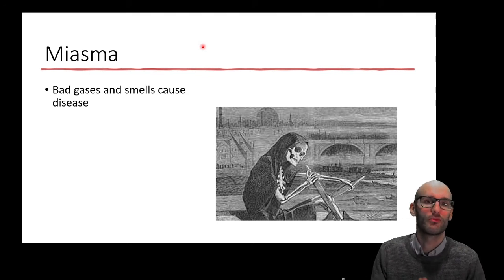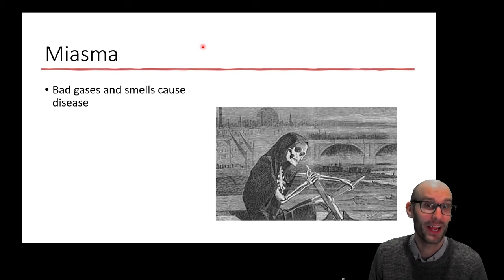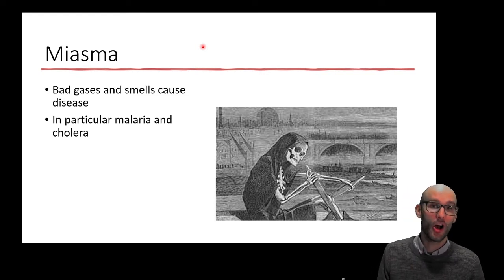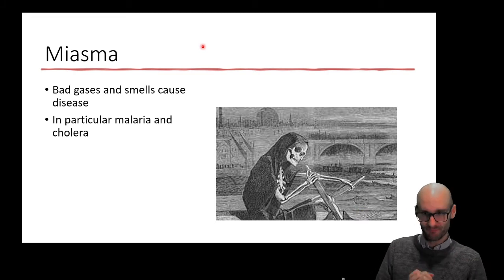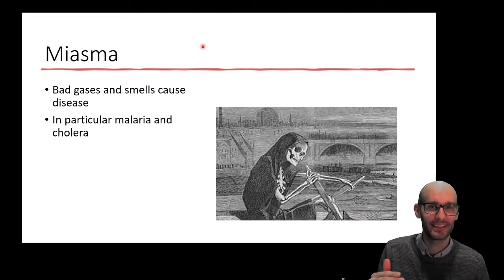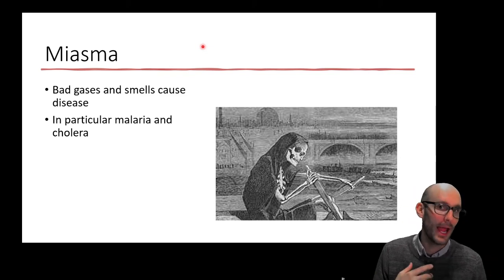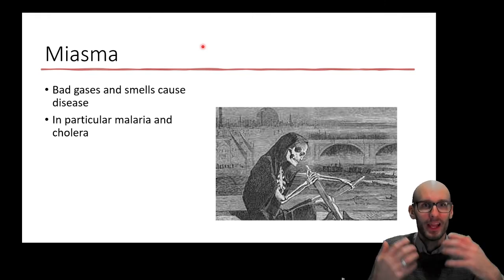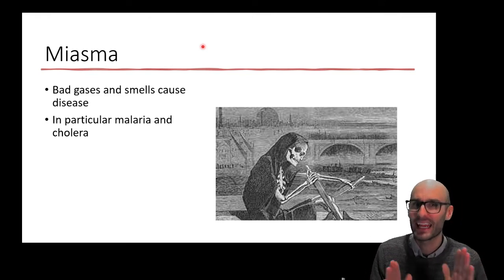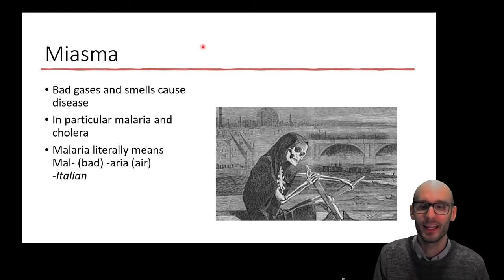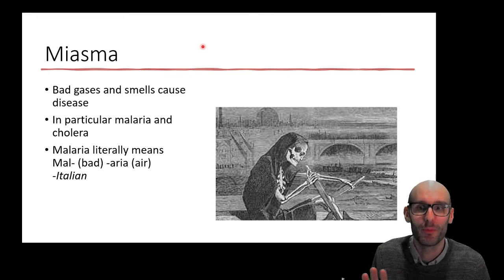Miasma kind of makes sense a little bit — you've got raw sewage, rotting meat, and diseases are likely to spring up. Two really good examples: malaria and cholera were believed to be caused by bad gases. Malaria is spread by mosquitoes, which breed in still, dirty water — you'd see bad smells alongside puddles that breed mosquitoes. Cholera is typically spread by mixing sewage and drinking water, and sewage smells bad. In fact, malaria literally means 'bad air' — 'mal' means bad, and 'aria' means air in Italian. This is how convinced they were of the miasma theory.